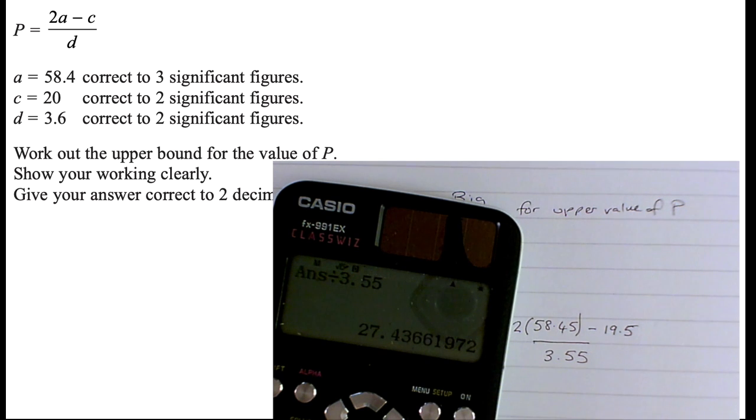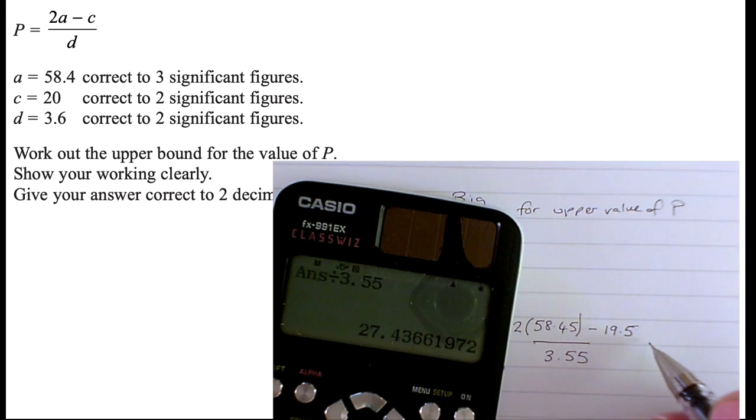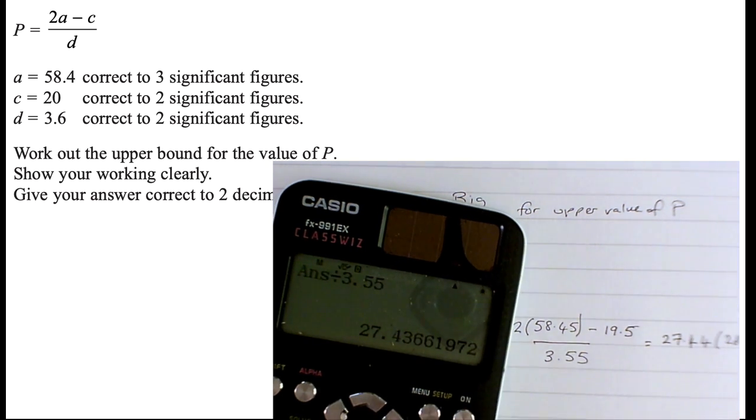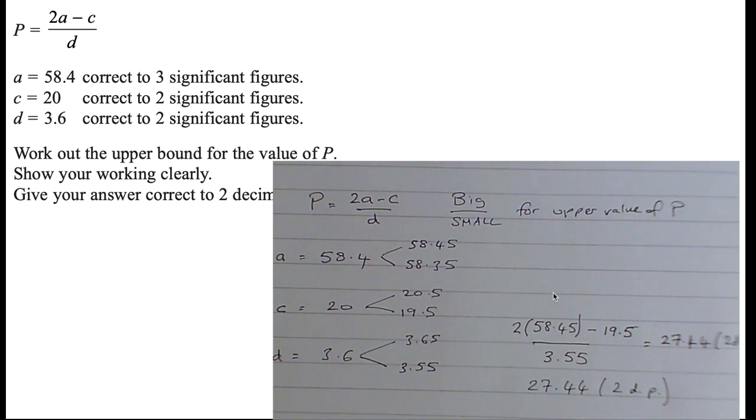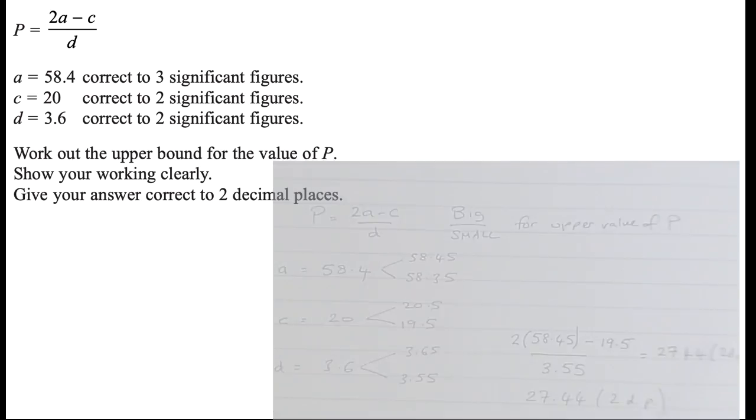So I'm getting 27.44 to two decimal places. 27.44 to two decimal places. That's not very focused there. Sorry about that. I'll write it a bit. I'm just a second. There we go. 27.44 to two decimal places. I recommend that you write the 2dp. It helps remind you that you've actually answered the question they've asked you.